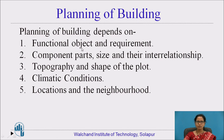Functional object means for what purpose the building has to be constructed — that will be the main object. As per that, we have to take the requirements of the building, and the component parts such as doors and windows, where they should be placed. Topography refers to the plot, which should have a strong foundation. The strata should support the foundation work. The shape of the plot should be mostly rectangular so that placing of all the rooms can be done easily.